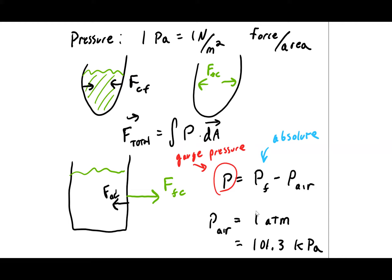To find the force exerted by a fluid on the walls of its container, I'm generally going to be integrating the pressure over the area. There is air pressure around us all the time, so we might talk about gauge pressure, which is the absolute pressure minus the atmospheric pressure surrounding us. Atmospheric pressure can be expressed as one atmosphere, also 101.3 kilopascals.